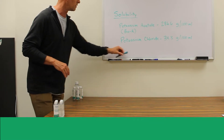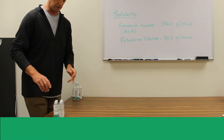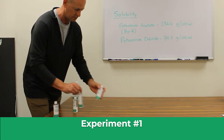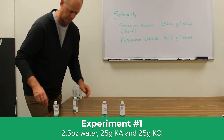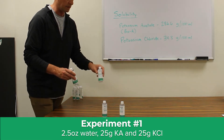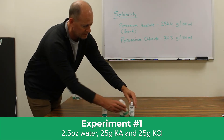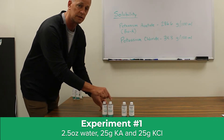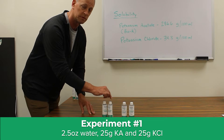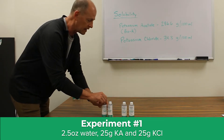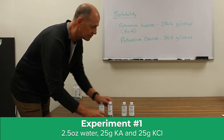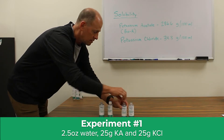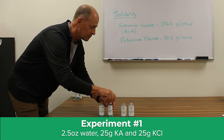We're going to do a little mixing experiment. We have 2.5 ounces of water, and in each of these bottles — here's potassium acetate, here's potassium chloride — we have the same volume: 25 grams of material. I'm going to add the water into each one and we're going to see what happens with solubility.